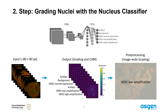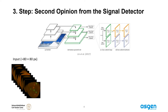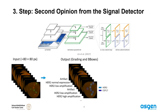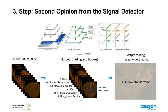The signal detector is the last component of our pipeline and classifies each nucleus image a second time, essentially giving a second opinion in addition to the nucleus classifier. For this task we chose the RetinaNet object detector to localize and classify the fluorescent signals within each nucleus. This provides further details regarding the number and position of FISH signals per nucleus, and the FISH image-wide grading is inferred in the same way as mentioned before.